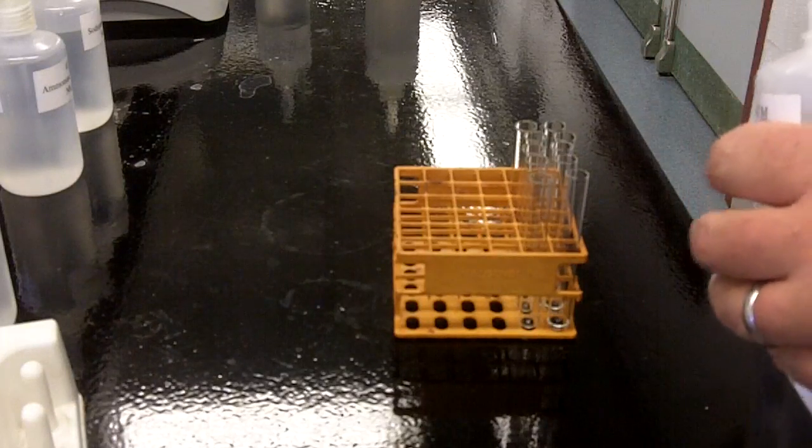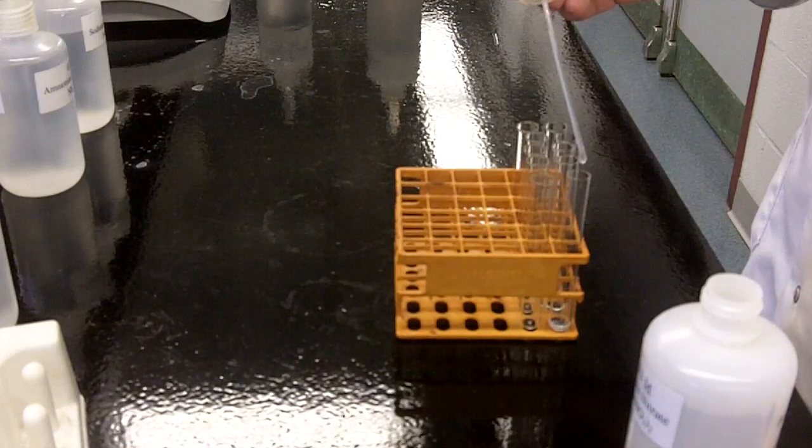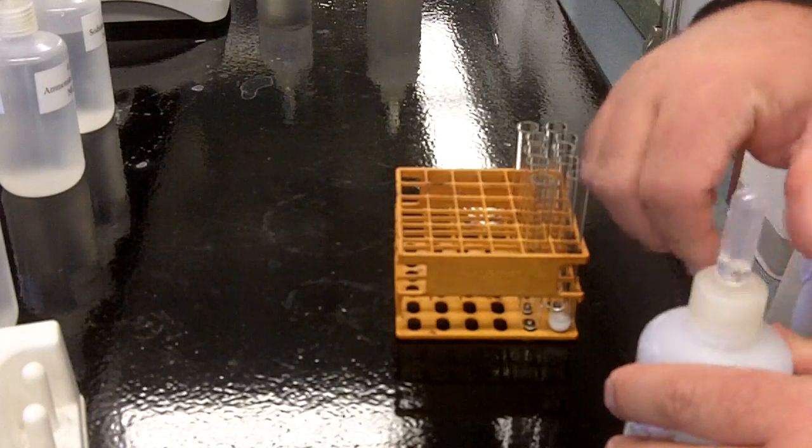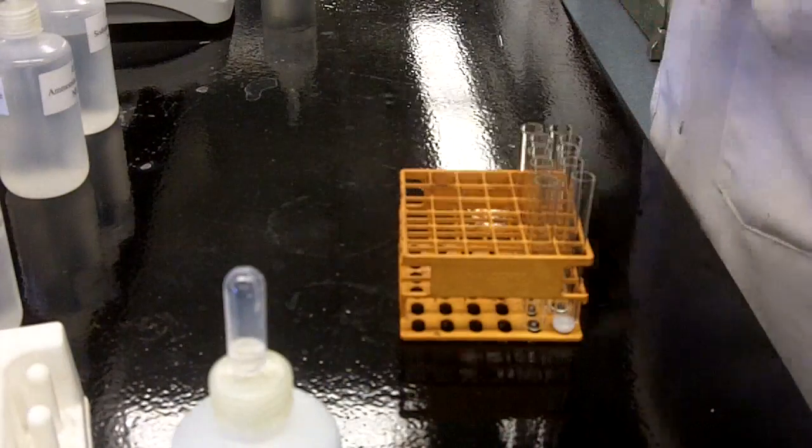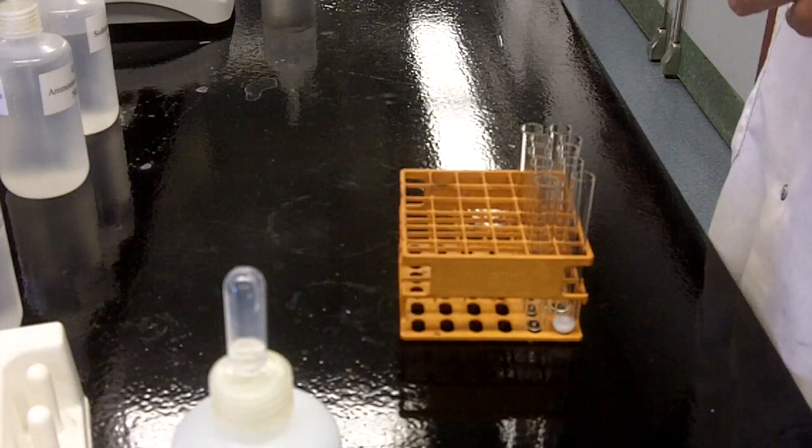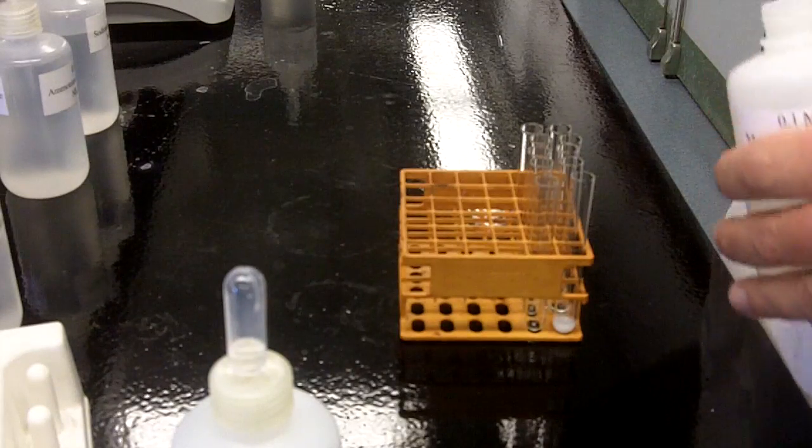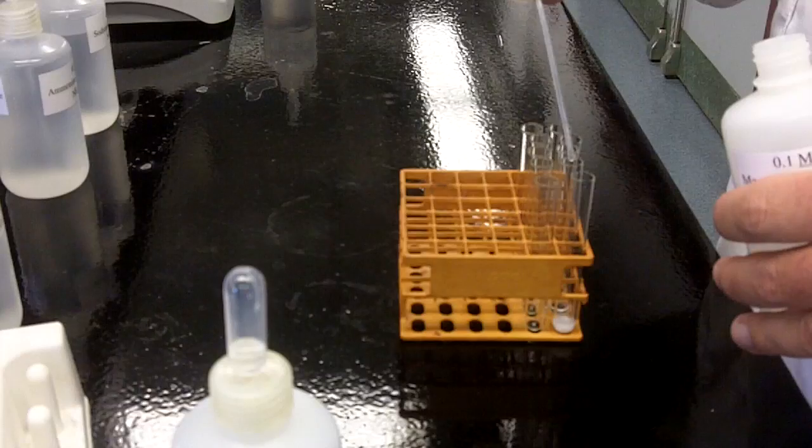Some of these will be very easy to identify - that one obviously is forming a precipitate - but especially with the ammonia and with the hydroxide, you're going to want to make some observations along the way. Here I'm just adding all five of them now.